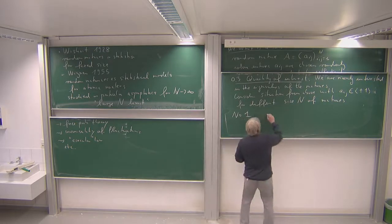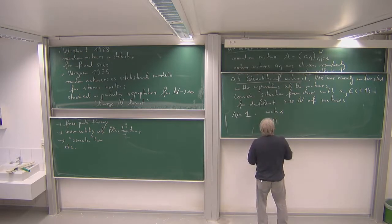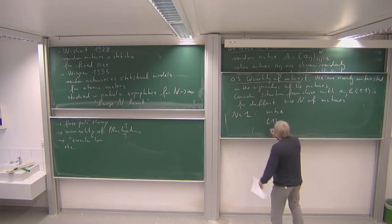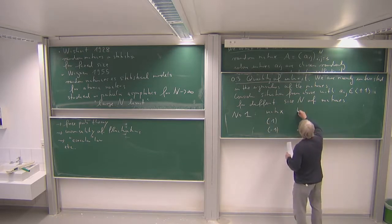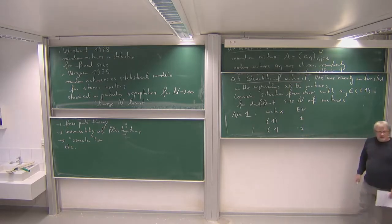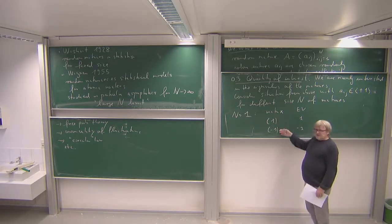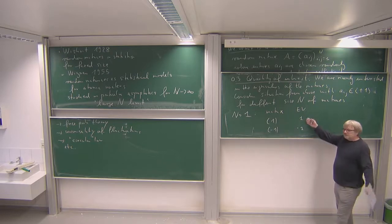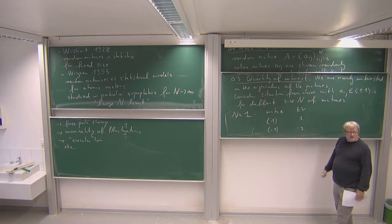The smallest possible n is n equal to one, a one by one matrix which is very trivial. In this case as my matrix I have only two possibilities: either the matrix where the entry is one, or the matrix where the entry is minus one. The eigenvalues are one and minus one respectively. Using probabilistic language, each has probability one half, so with probability one half I have eigenvalue one and with probability one half eigenvalue minus one.